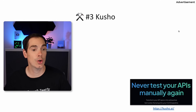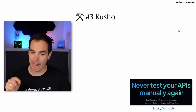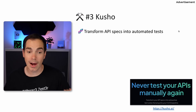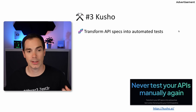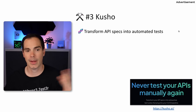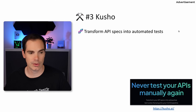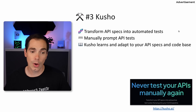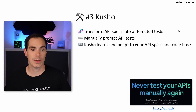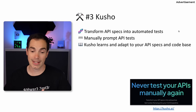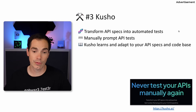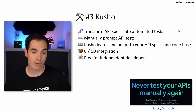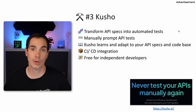The next tool is called Kusho. The website says 'never test your APIs manually again.' It can transform API specs into automated checks — you give the tool the API specs and you get API test automation scripts. You can also manually prompt API tests, and Kusho learns and adapts to your API specs and code base. It has CI/CD integration and is free for independent developers.